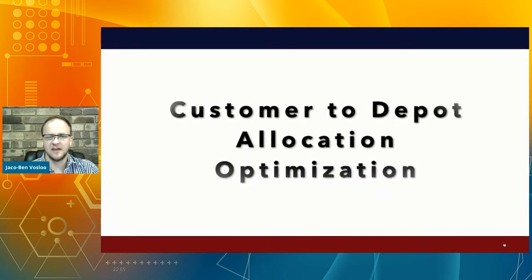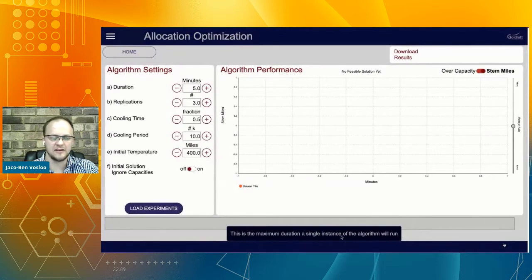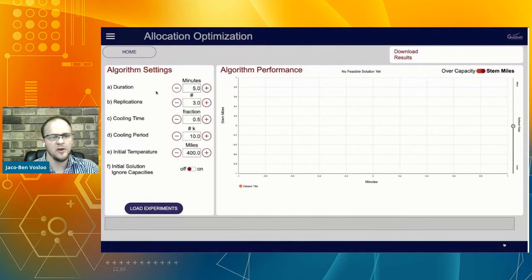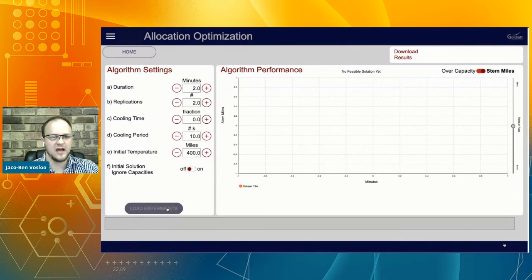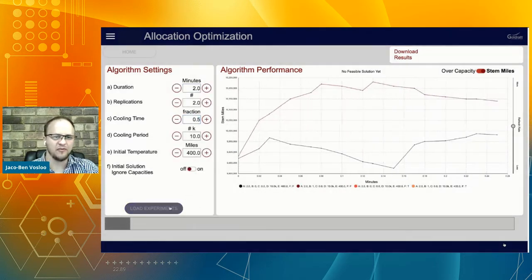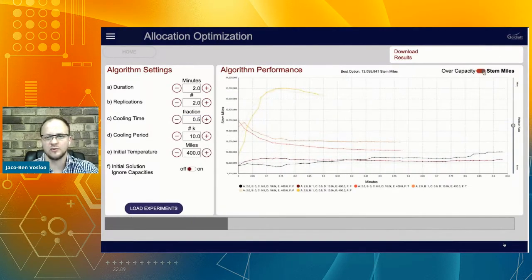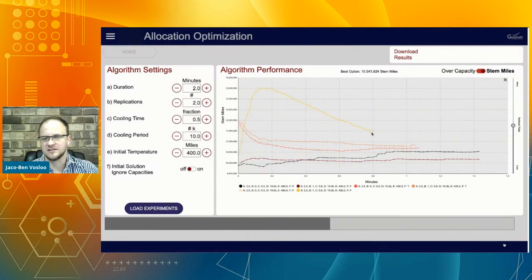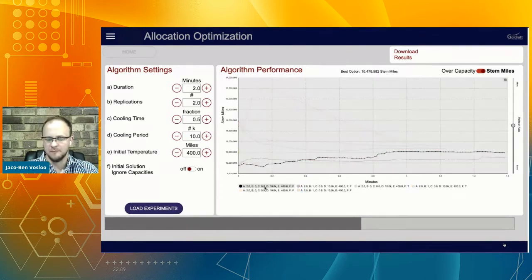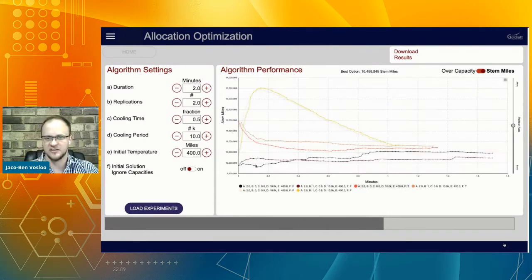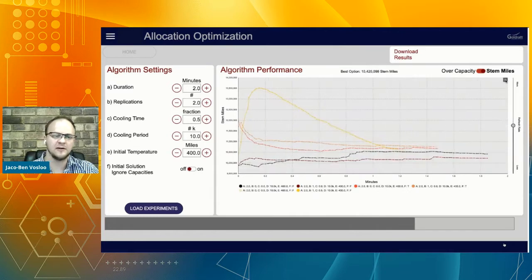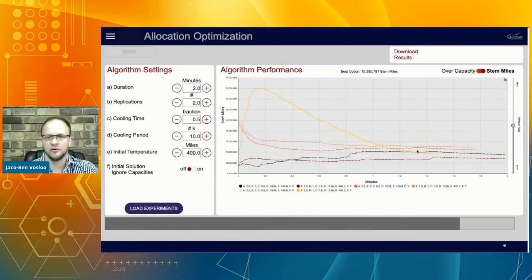Once the data was set up, we could allocate customers to depots. As shown in the video, you had the ability to set up a number of different experiments for the simulated annealing algorithm. Using multi-threading, we could see in real time what the optimized stem miles are for each scenario — watching the algorithm start off, allow worse results as per simulated annealing behavior, and then improve results significantly. We could also verify whether results addressed capacity concerns.